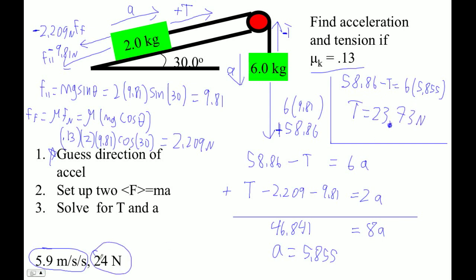So 24 newtons with two sig figs. So step one, guess the direction of the acceleration. Set up the F equals MA equation, and that's going to involve figuring out the forces that you normally do. You can't solve them because you don't know one of the forces and you don't know the acceleration. And then solve for T and A. That always involves just adding these things together. That's all there is to it.